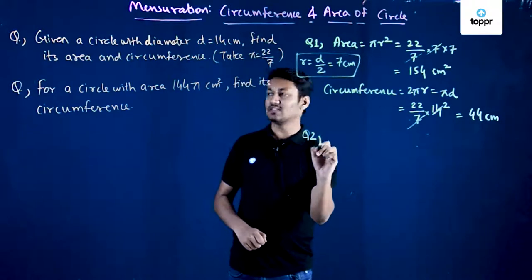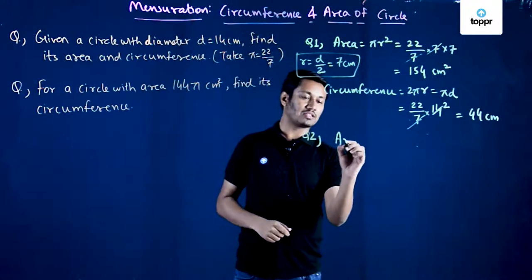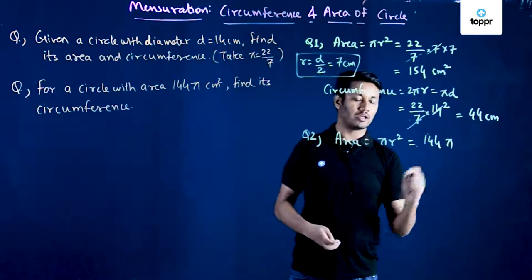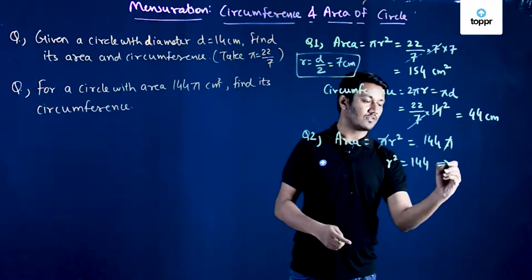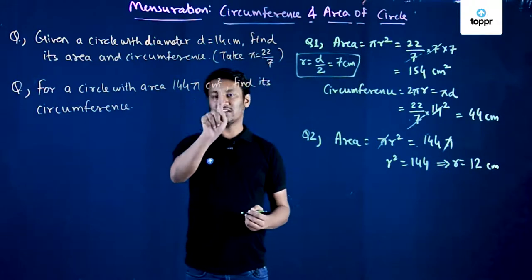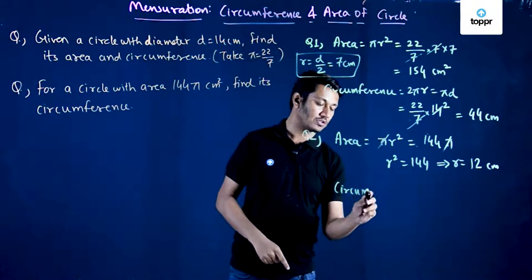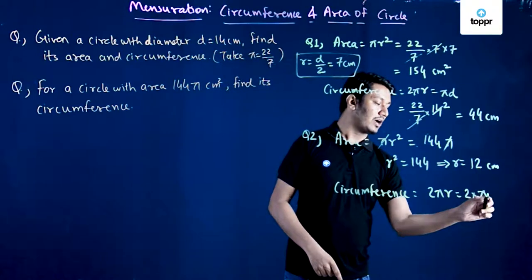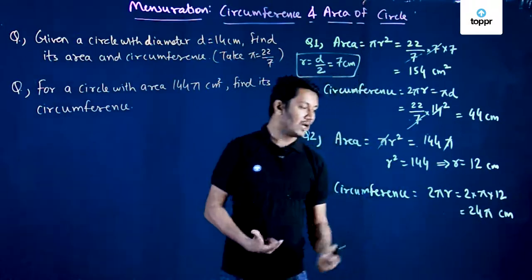The next question says: for a circle with area 144π cm², find its circumference. Area is given to us, and we know area = πr². Setting πr² = 144π, pi cancels out and we get r² = 144. So r = √144 = 12 cm. With r = 12 cm, the circumference is 2πr = 2 × π × 12 = 24π cm.